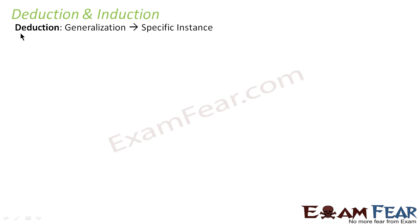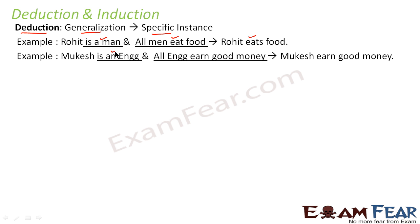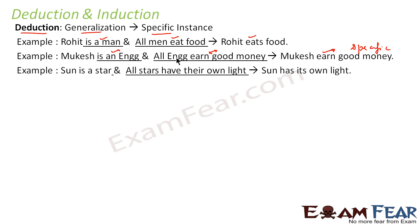What is deduction? Deduction is when we go from generalization to a specific instance. For example, we have two general statements: Rohit is a man, and all men eat food. Combining these two general statements, we get a specific statement that Rohit eats food.